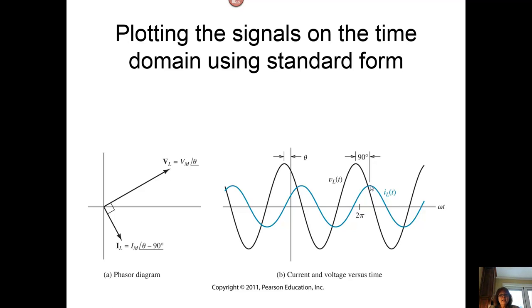If we think about going counterclockwise around the unit circle, we see that the voltage passed the zero crossing first and then we have the current going 90 degrees later.